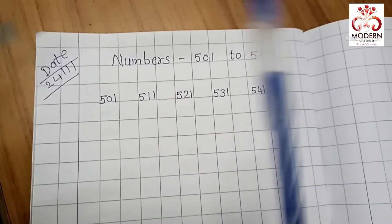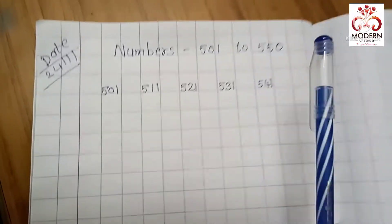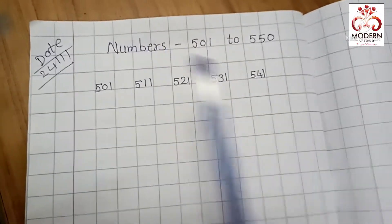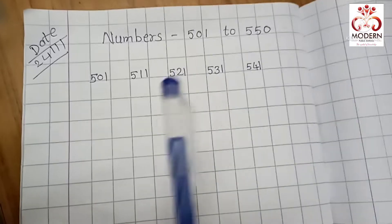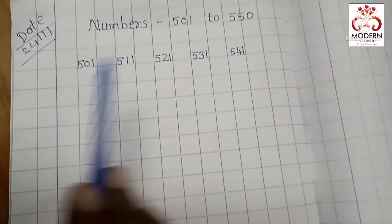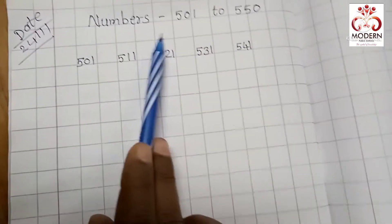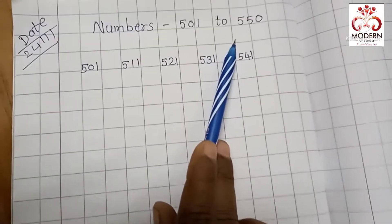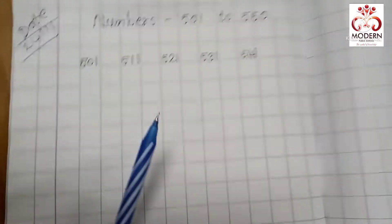So I hope you know very well till 500 numbers how to write and how to read. So let's start today's session 501 to 550. So students, first whenever you write, mention date and heading of the topic properly. Then you have to start writing here.